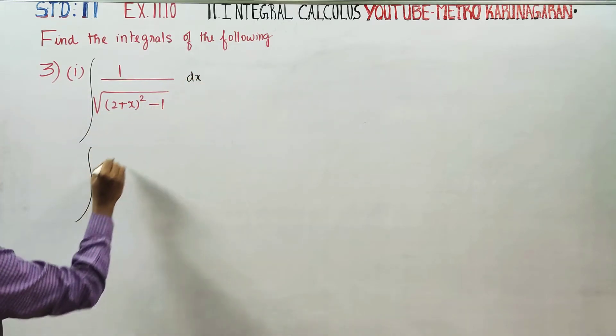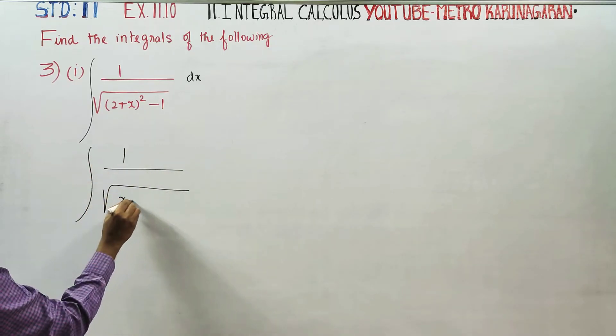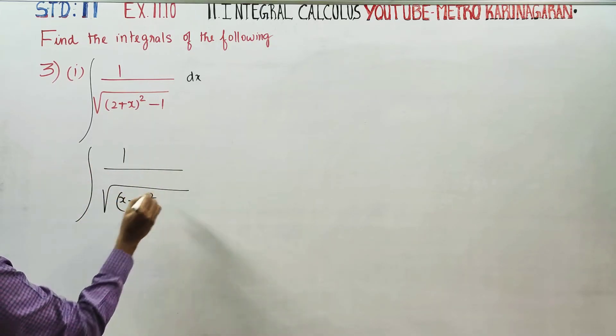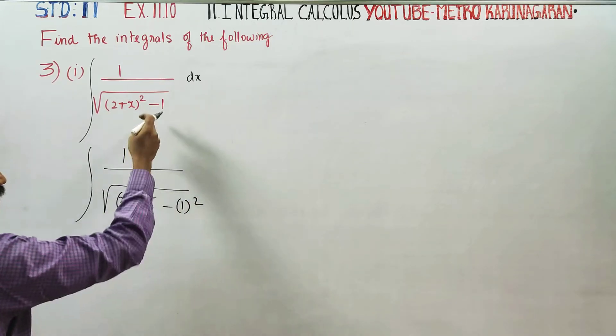By integration of 1 by square root of X plus 2, we can write X plus 2 whole square minus 1, which can be written as 1 square.